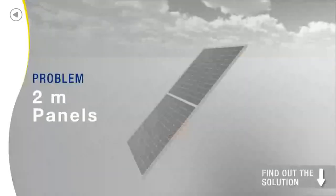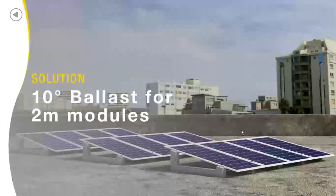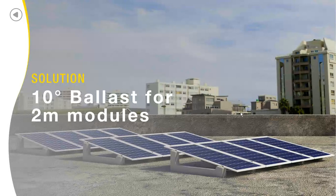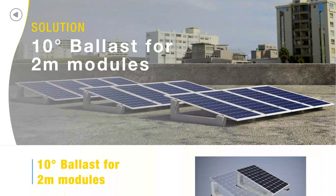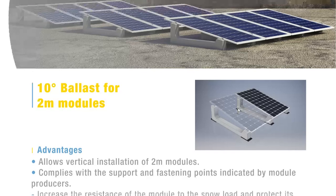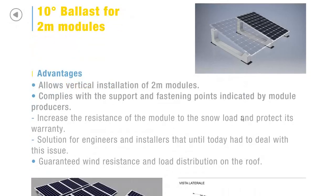Another need that is growing more and more is the use of 2-meter panels in vertical laying. In this case, we at Sun Ballast recommend the use of our 10-degree ballast. Our research and development office has designed this ballast to cope with this new market requirement. It allows the vertical laying of 2-meter modules, complies with the support and fixing requirements indicated by the module producers, and as a result increases the resistance of modules to snow load while protecting the panel warranty. It is a great solution for designers and installers who until now have had to arrange this themselves.